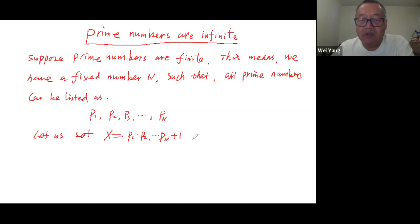So X is greater than all of these prime numbers, all of P1, P2, to Pn.